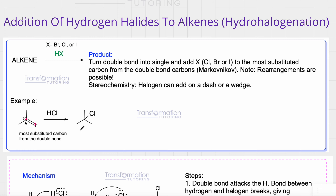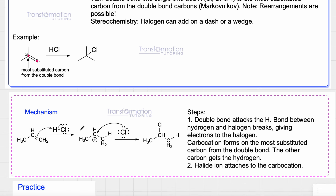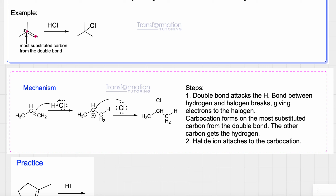Why is that so? Let's look at the mechanism. This mechanism consists of two steps. In the first step, my double bond takes the hydrogen from HCl, and the bond between hydrogen and chlorine breaks, giving electrons to chlorine. My double bond is no longer there because electrons from the double bond were used to connect one of these carbons to the hydrogen.